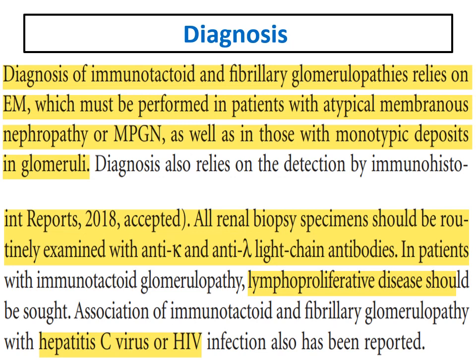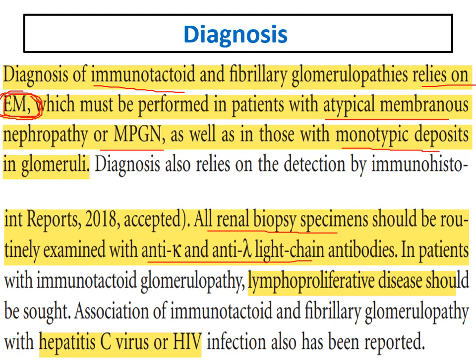Again, diagnosis of immunotactoid relies on electron microscopy. When I suspect a patient with nephrotic syndrome and the renal biopsy reveals atypical membranous or MPGN, immunotactoid usually shows monotypic or monoclonal deposits. In fibrillary it is usually polyclonal, but in immunotactoid it is monoclonal. Renal biopsies should be stained with anti-kappa and anti-lambda to determine whether deposits are monoclonal or polyclonal.